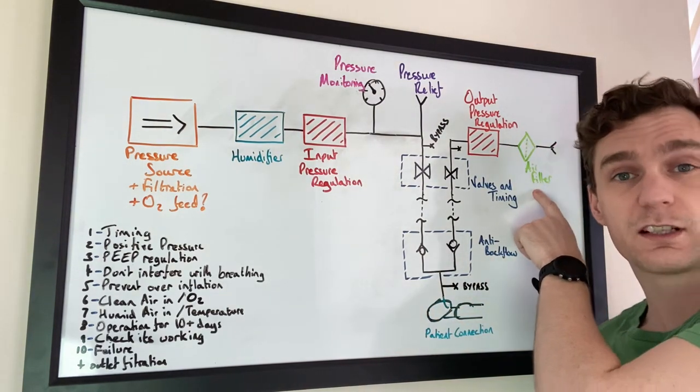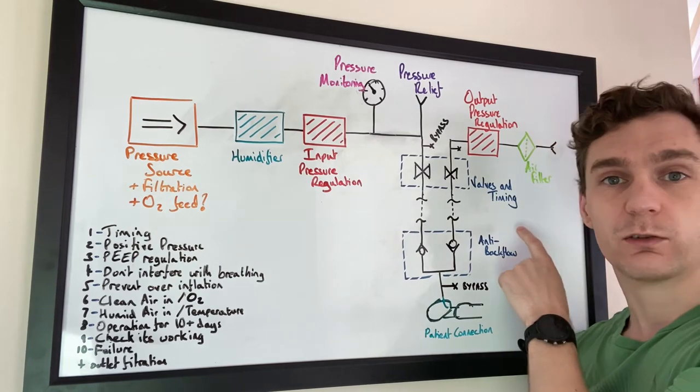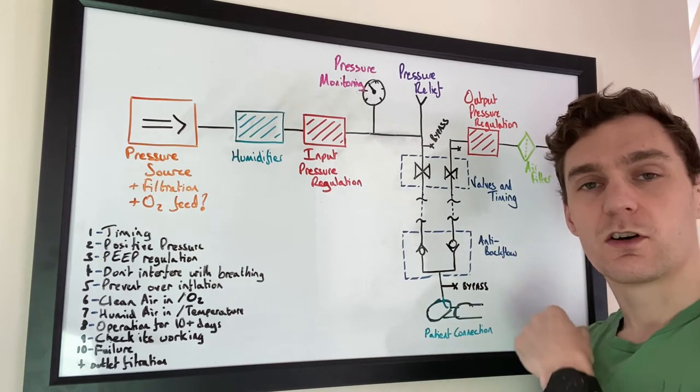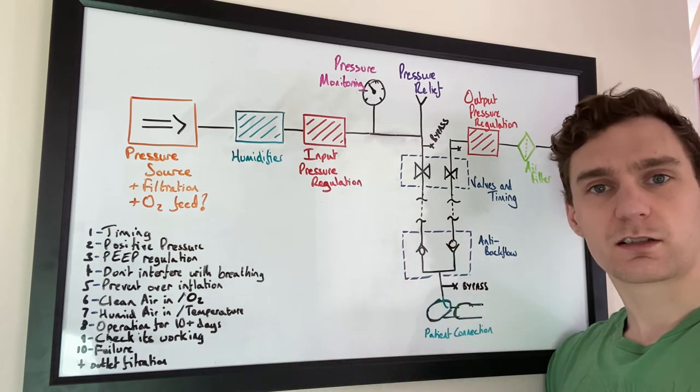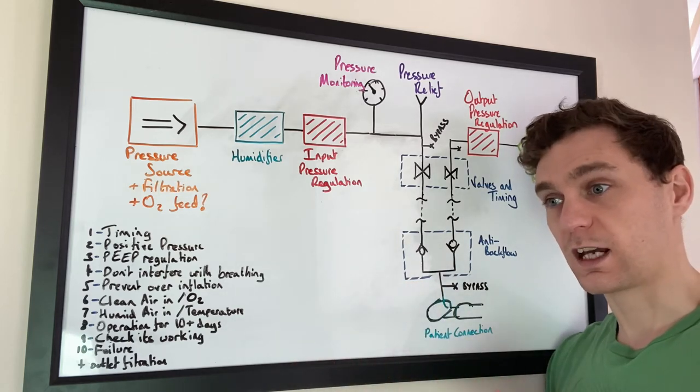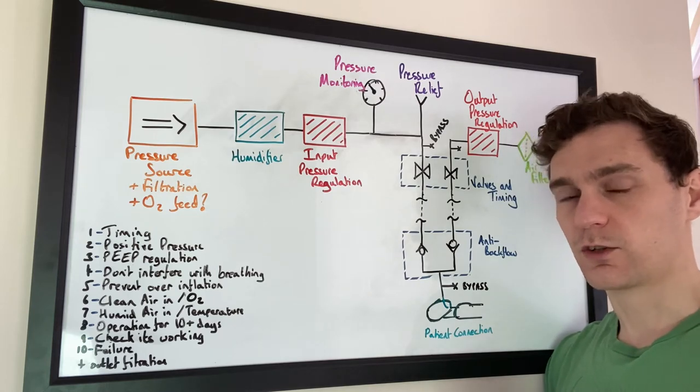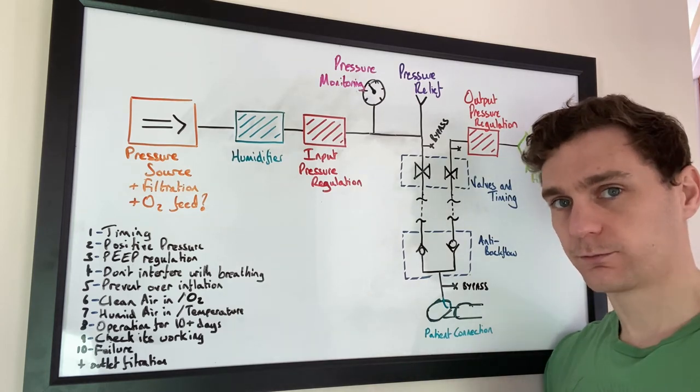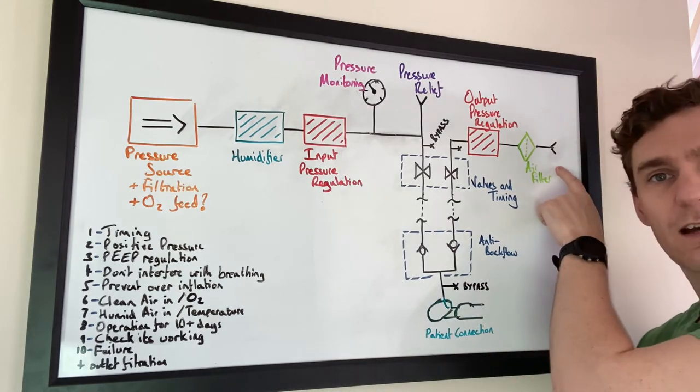Then we have an air filter. This is for reducing the viral load in the room where this is operating, so you are not expiring viral particles into the room which could get clinicians ill or it could increase the viral load on patients in the surrounding area. And then we just have an exhaust.